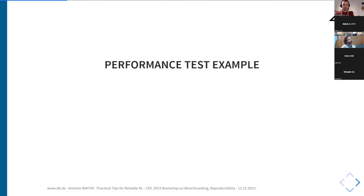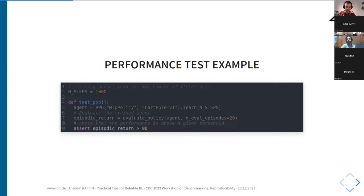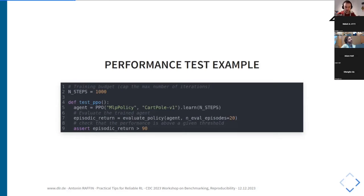For a performance test example with PPO — proximal policy optimization — we define a small training budget, set the maximum number of iterations as small as possible, train on a simple environment using that budget, and after training we evaluate it. The test checks that performance reached for this small budget is above a given threshold. If you make a tiny change to the algorithm, it may still learn something but no longer reach the threshold — this is how we detect regressions.